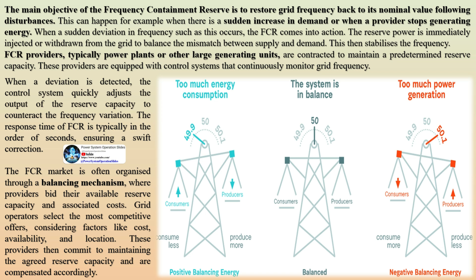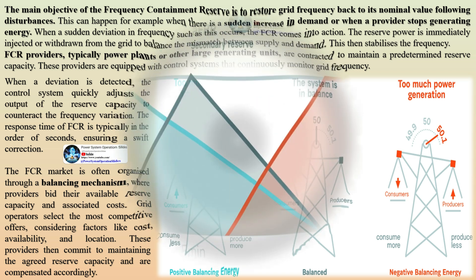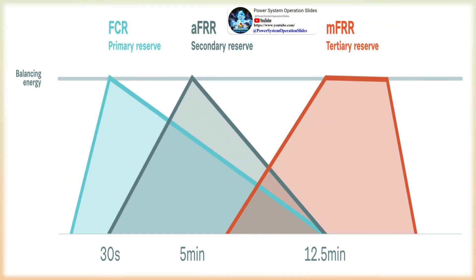After an initial 30-second period, AFRR takes over as the secondary reserve, while the tertiary reserve known as MFRR provides support or partially takes over from AFRR after approximately 12.5 minutes.